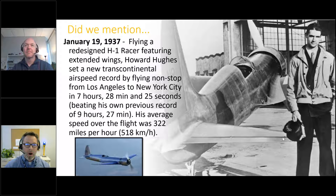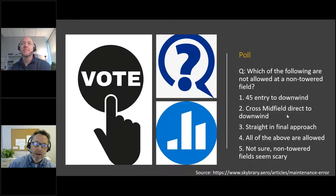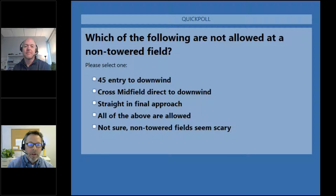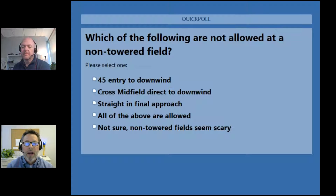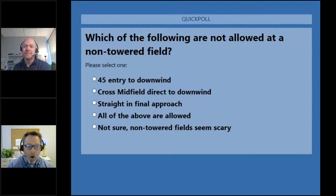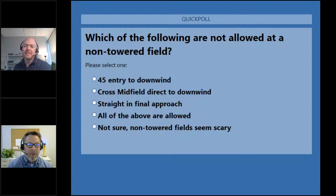Time to move on to our poll. The question today related to our topic is: which of the following are not allowed at a non-towered field? The options are: 45-degree entry to downwind, crossing midfield direct to downwind, straight-in final approach, all of the above are allowed, or not sure — non-towered fields seem scary.